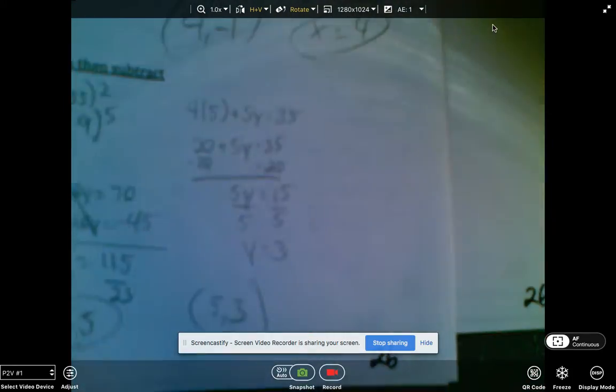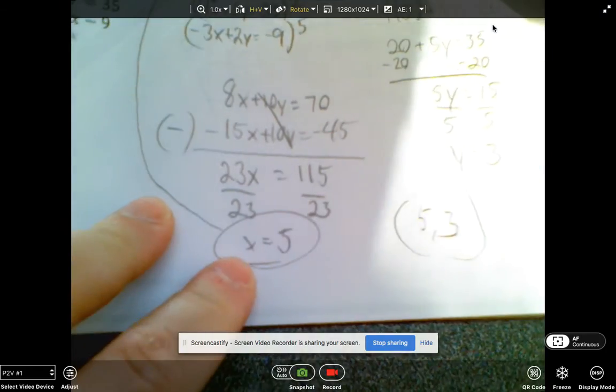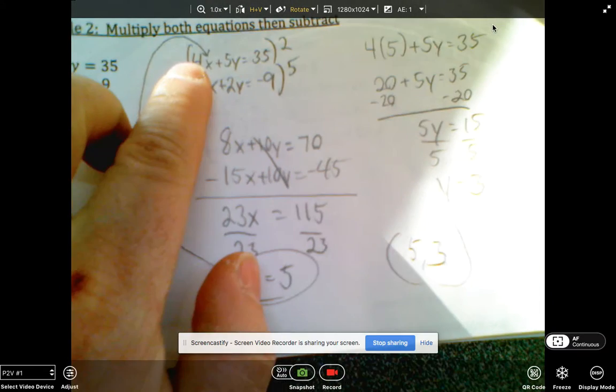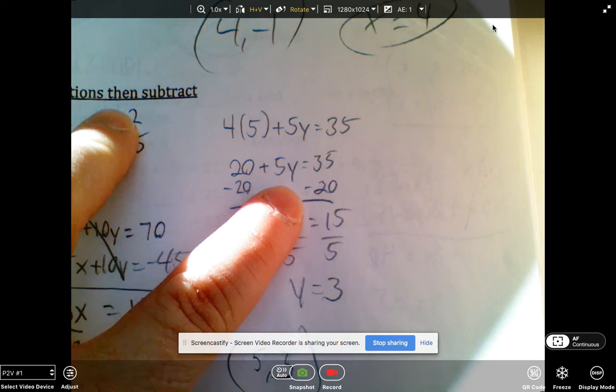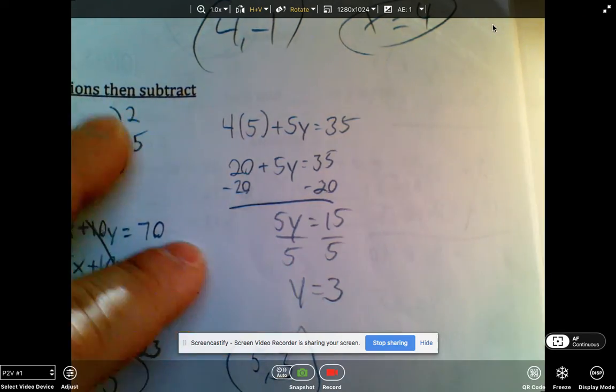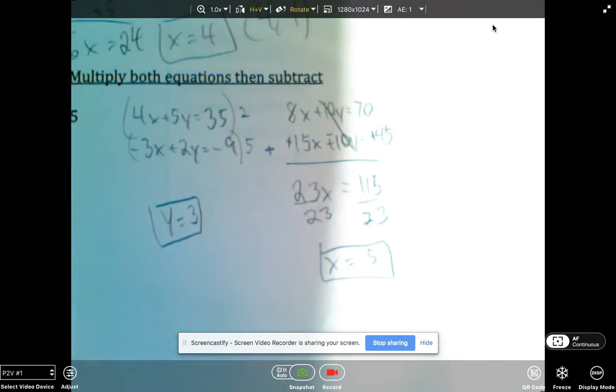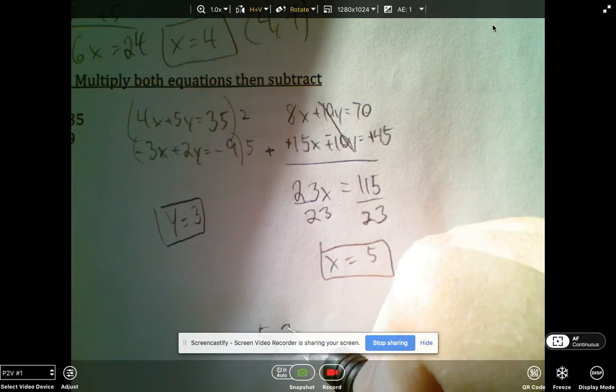And here's my work for that. You can see if I take this x equals 5 and I back sub it there, it's 20 plus 5y equals 35 minus 20 divided by 5 is 3. So your final solution is 5 comma 3.